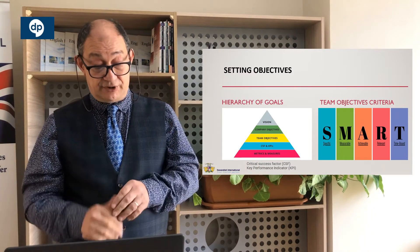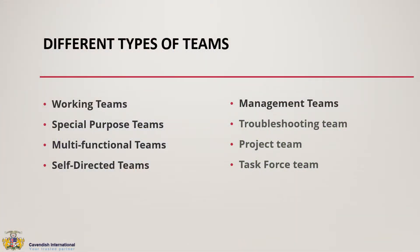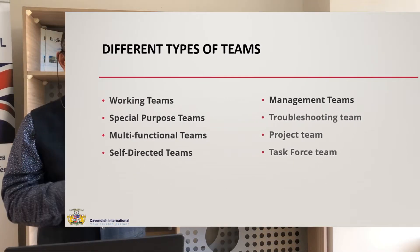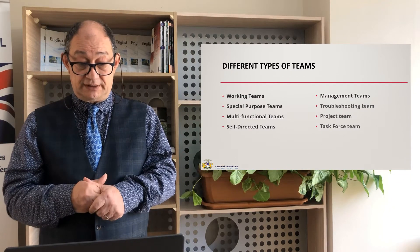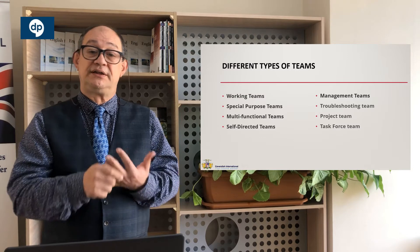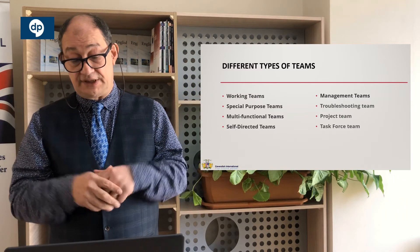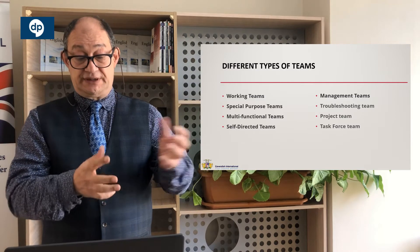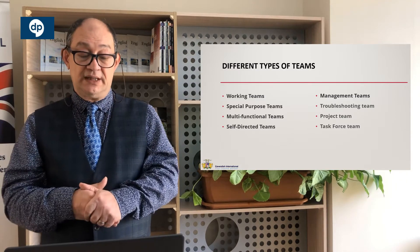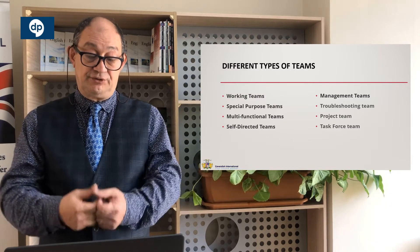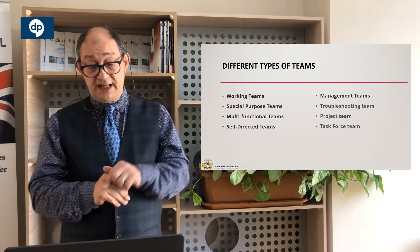We get agreement on those objectives with the stakeholders — the company directors, whoever is setting up and paying for this team. Once we have the objectives, we move on to determining what type of team we are talking about. Working teams are the most common type. Every company organizes its manpower around the functions of the company — marketing team, finance team, HR team, sales team, distribution team. These working teams have objectives that feed into achieving the overall company objective.